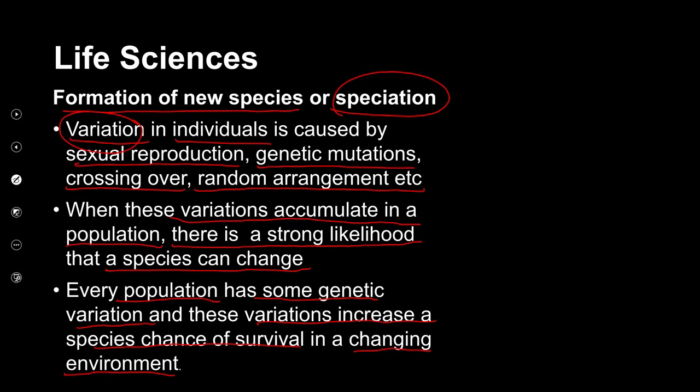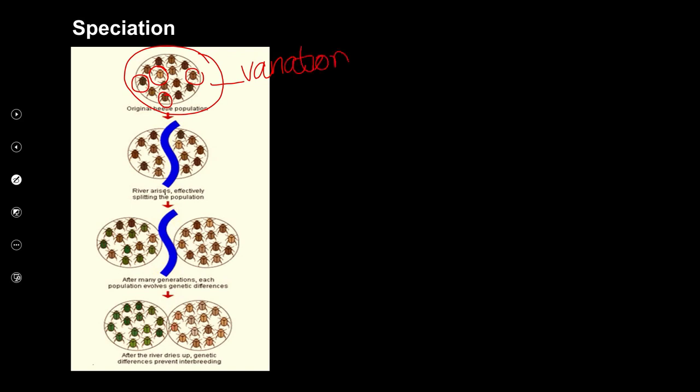Here's an example of speciation — a population of beetles. Looking closely at the diagram, we can see there are some dark brown beetles, some slightly lighter ones, and even lighter ones. So here we can see there's variation within the population. That's very important — there's variation in the population.